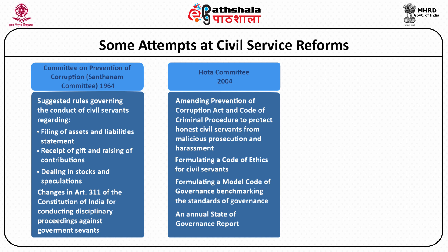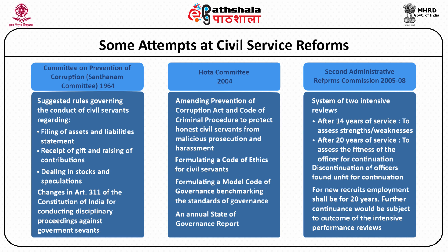The Huta Committee recommended amendments in the Prevention of Corruption Act to safeguard honest civil servants, enactment of the Code of Conduct for civil servants, Code of Ethics for civil servants, and Code of Governance for civil servants. The latest in line of reforms is the Second ARC report given by the Administrative Reforms Commission. This commission gave wide-ranging recommendations for intensive performance review of officers at two stages — one after 14 years of service and second after 20 years of service. It suggested that those officers who are unfit to continue in their jobs should be retired, and the initial appointment should only be made for 20 years; after 20 years, if their performance is reviewed as fit they continue, otherwise they are given compulsory retirement.